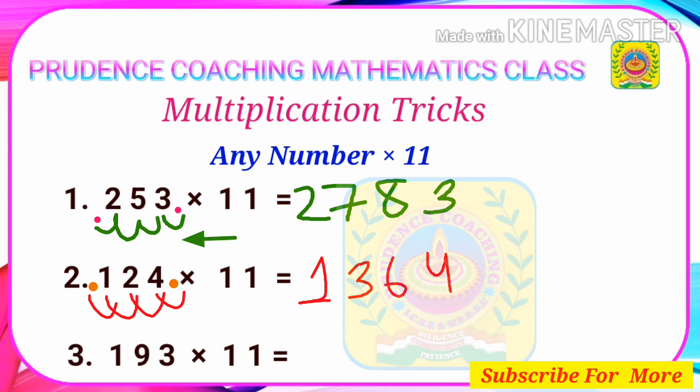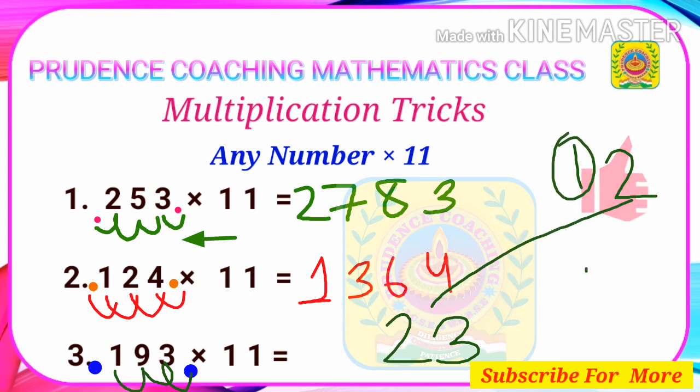Here also we will do the same thing that is 0 plus 3 will give us 3. 3 plus 9 will give us 12. As we are getting 2 numbers so 2 will be down and 1 will be carry. 9 plus 1 will give us 10, 10 plus 1 carry previously will give us 11. So 1 will come down and 1 will be carry and we will get 1 plus 0 is 0 plus 1 carry will give us 2.